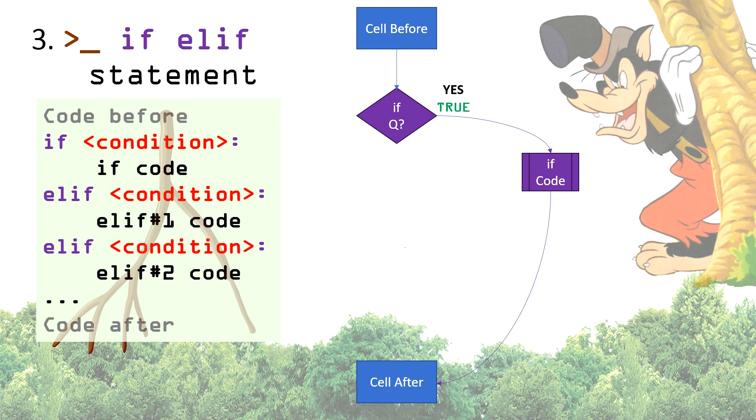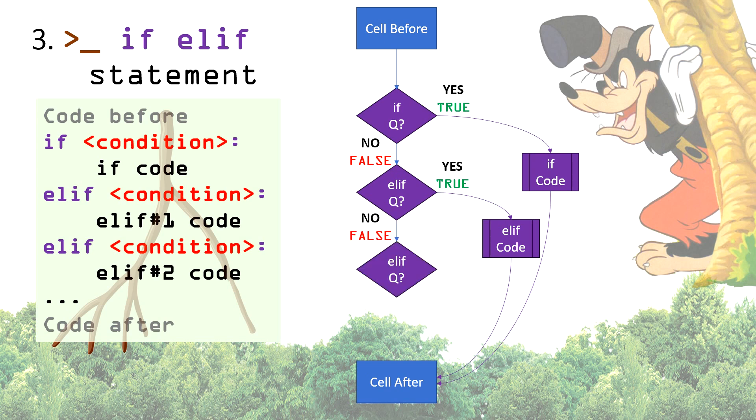In between, we have if condition diamond. In case of true answer, it will execute if code exactly like previous types and go to the code cells after. Now in case of false, it will move to another condition, which is the first elif condition this time. And once again, in this case of true answer, it will execute the elif code and go to the code cells after. That process will be repeated as many times as you have a number of elif conditions.